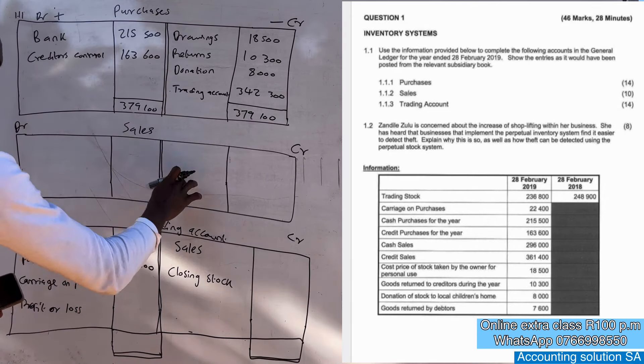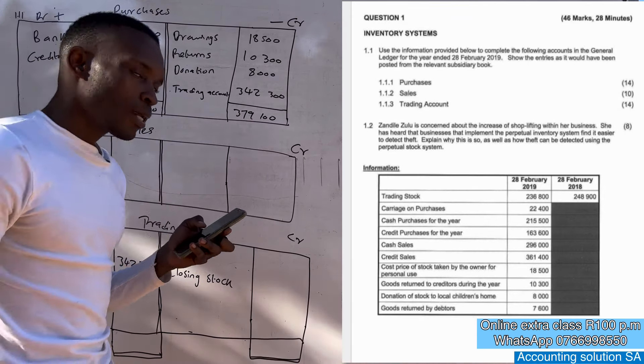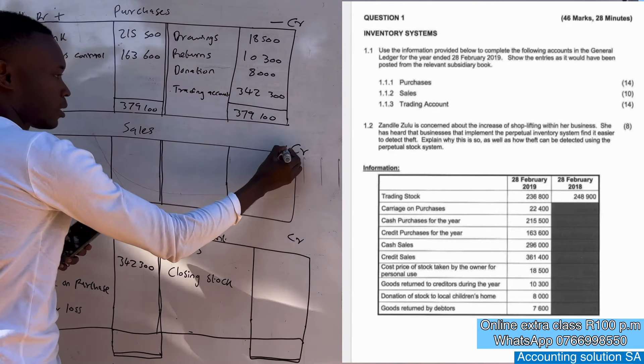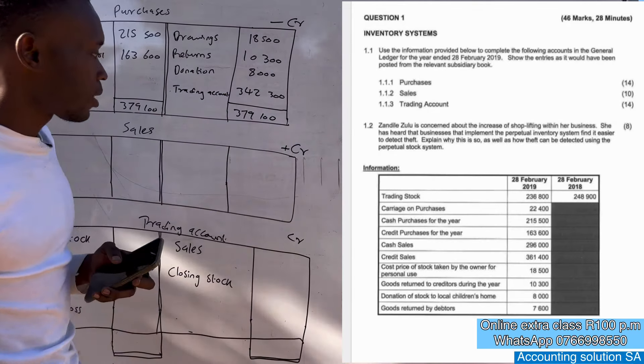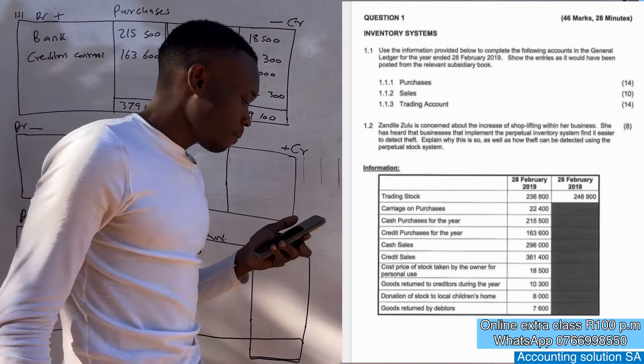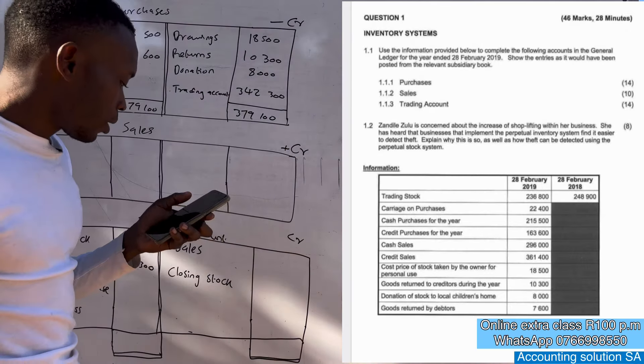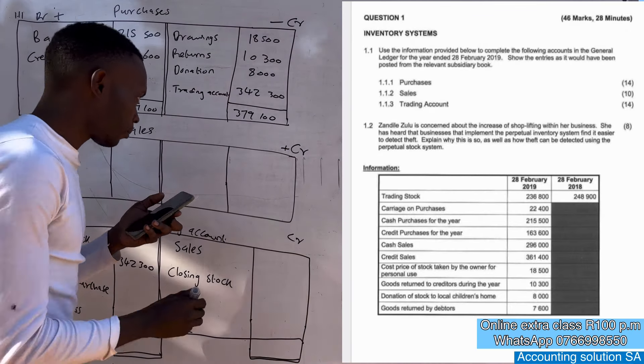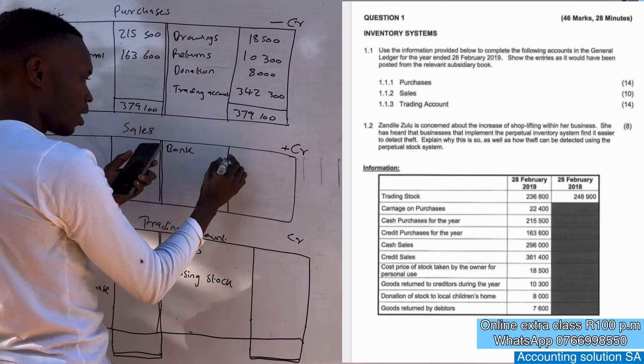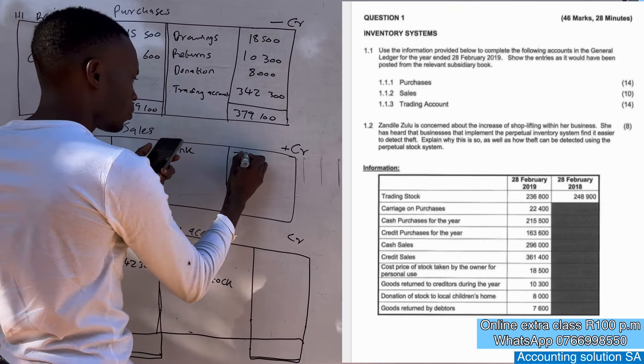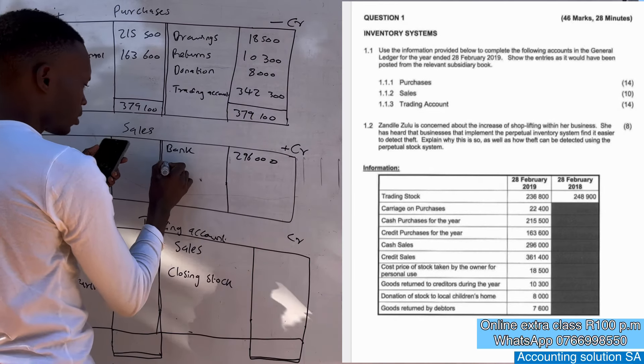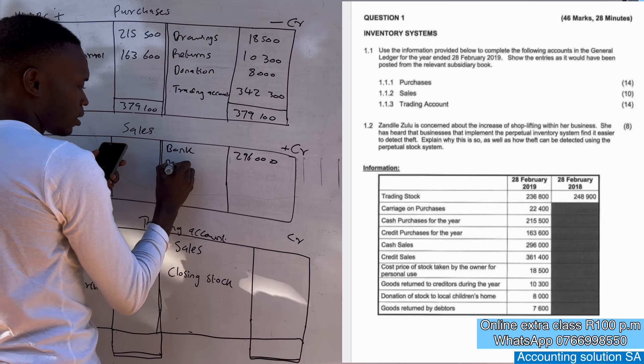Now we are going to prepare this at the same time. Under sales, whatever that we sell we record this side when our sales increase, but when our sales decrease like return we record this side. Let's check cash sales. Bank, this is what we receive, our income is increased by 296,000.